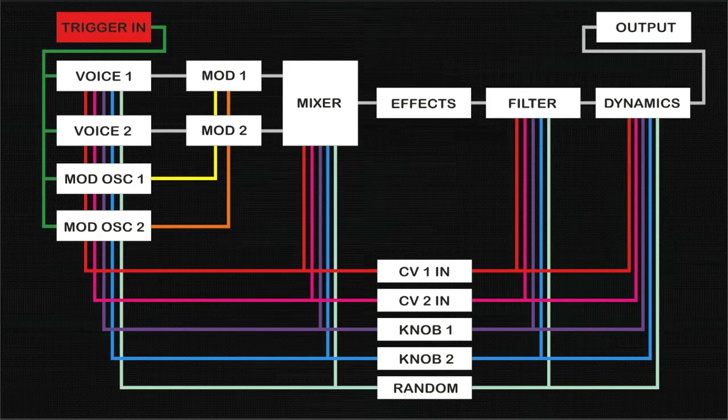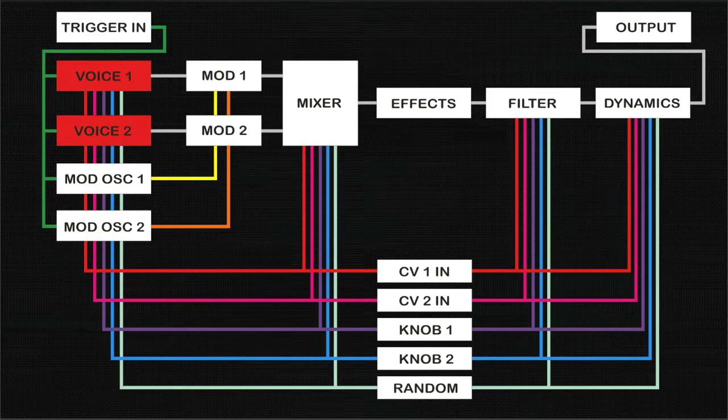This is the signal inserted into the eighth-inch trigger in jack on the front panel. When a rising edge trigger greater than 0.8 volts is detected, Voice 1 and 2 will start playing their selected sample from the beginning.